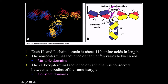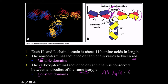Each heavy and light chain domain is about 110 amino acids in length, and there are many ways to recombine these. The amino-terminal (N-terminus) sequence of each chain varies between antigen binding sites. The carboxy-terminal (C-terminus) of each chain is conserved between antibodies of the same isotype — so all IgM molecules, for example, have the same Fc and the same constant/carboxyl-terminus domain.